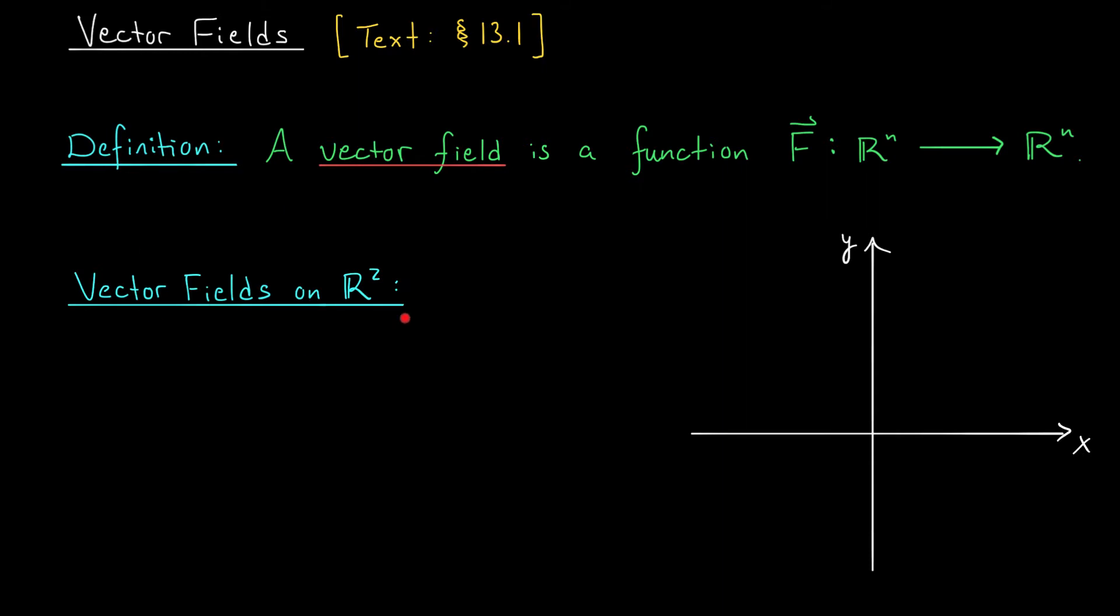So let's start with vector fields on R². At the moment, all we have to work with is our definition. A vector field on R² would be a function F from R² to R². Well if it's going from R² to R², then it takes in two inputs, we'll say x and y, and it spits out two outputs, which we could think of like a point or, more commonly, like a vector. So I'm going to write this in vector notation. It's going to spit out two components that will likely depend on x and y. So maybe in the first component, we have p of xy, and in the second component, we have a function q of xy. We could also write this in terms of our standard basis as p of xy times i hat plus q of xy times j hat.